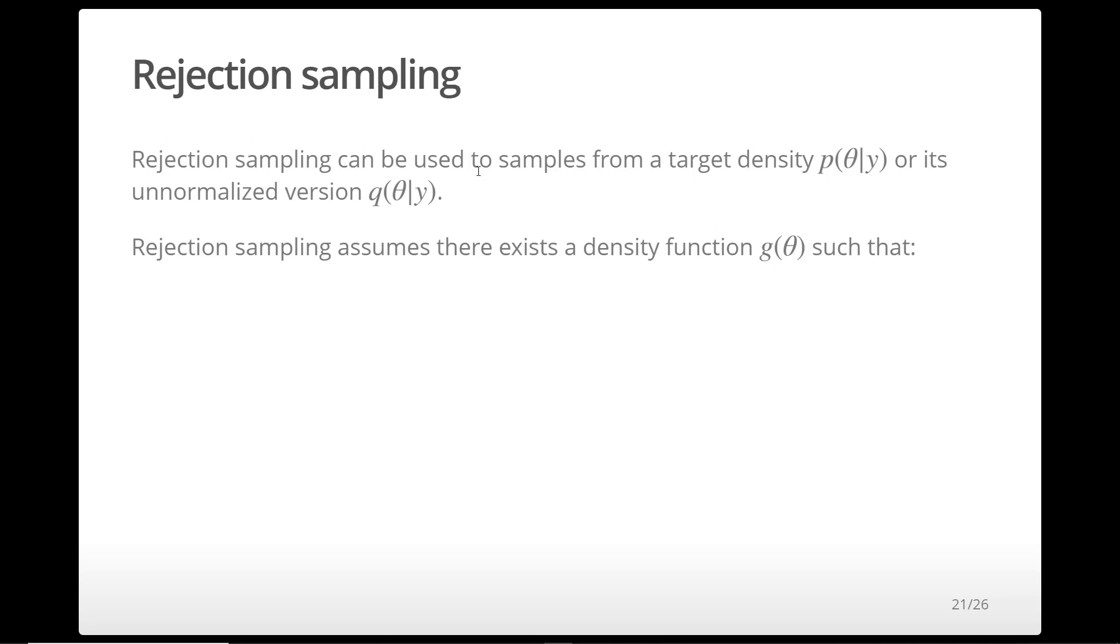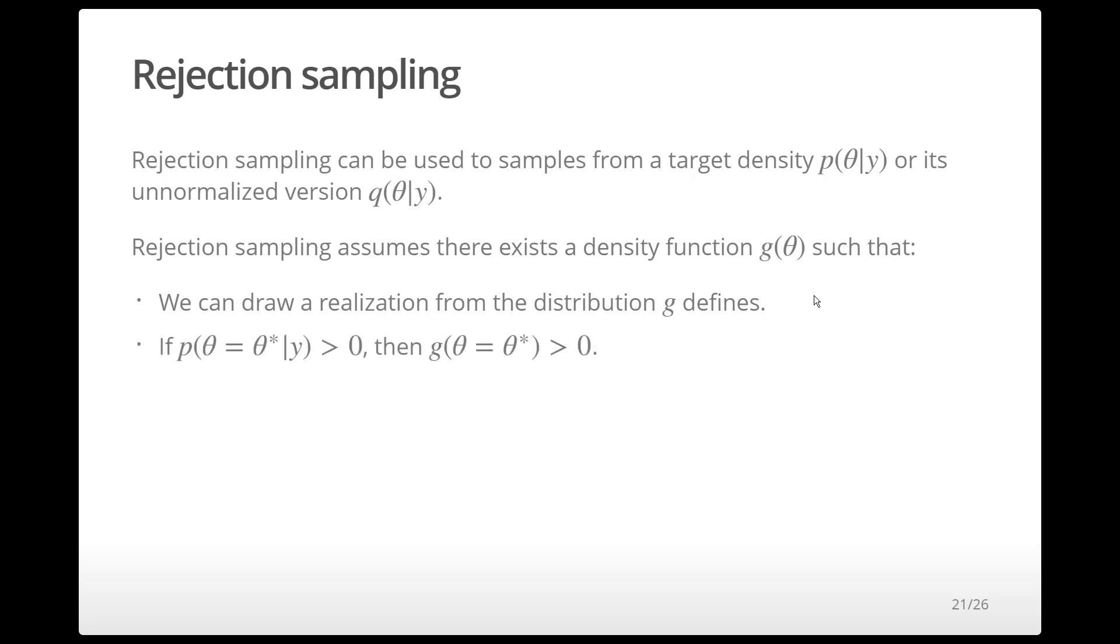In order to perform rejection sampling, we need to have a distribution with density g such that we can draw a realization from the distribution defined by g. Anywhere the target density is positive, g must also be positive.